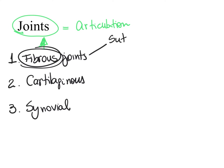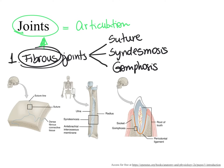We classify fibrous joints into different types: suture, syndesmosis, and gomphosis fibrous joints. A suture fibrous joint is characterized by a very narrow fibrous connective tissue between the bones, such as the sutures between our cranial bones. A syndesmosis fibrous joint is characterized by a wide fibrous connective tissue between the bones, such as the one found between the ulna and radius bones.